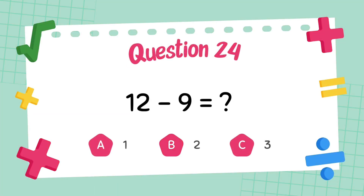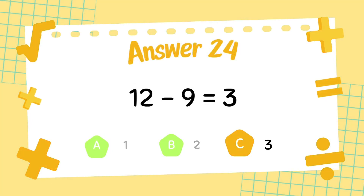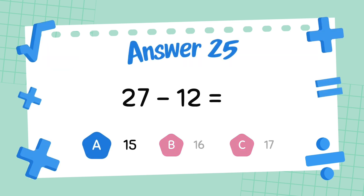What is 12 minus 9? The answer is 3. What is 27 minus 12? The answer is 15.